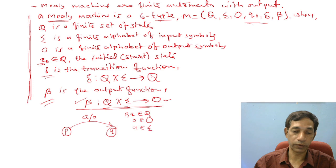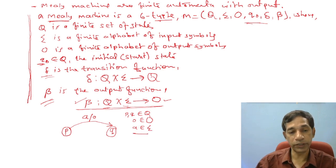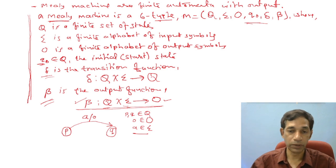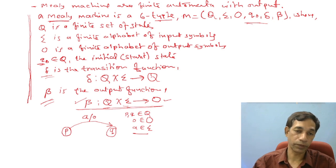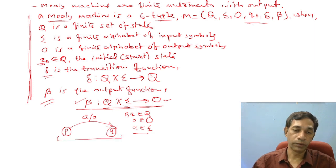So if your machine is at state p and input is a, it transits to state q and during the transition produces an output. From every state, for every input, you have to give some output, and you must have exactly one transition. This is the way a Mealy machine produces output — during the transition.